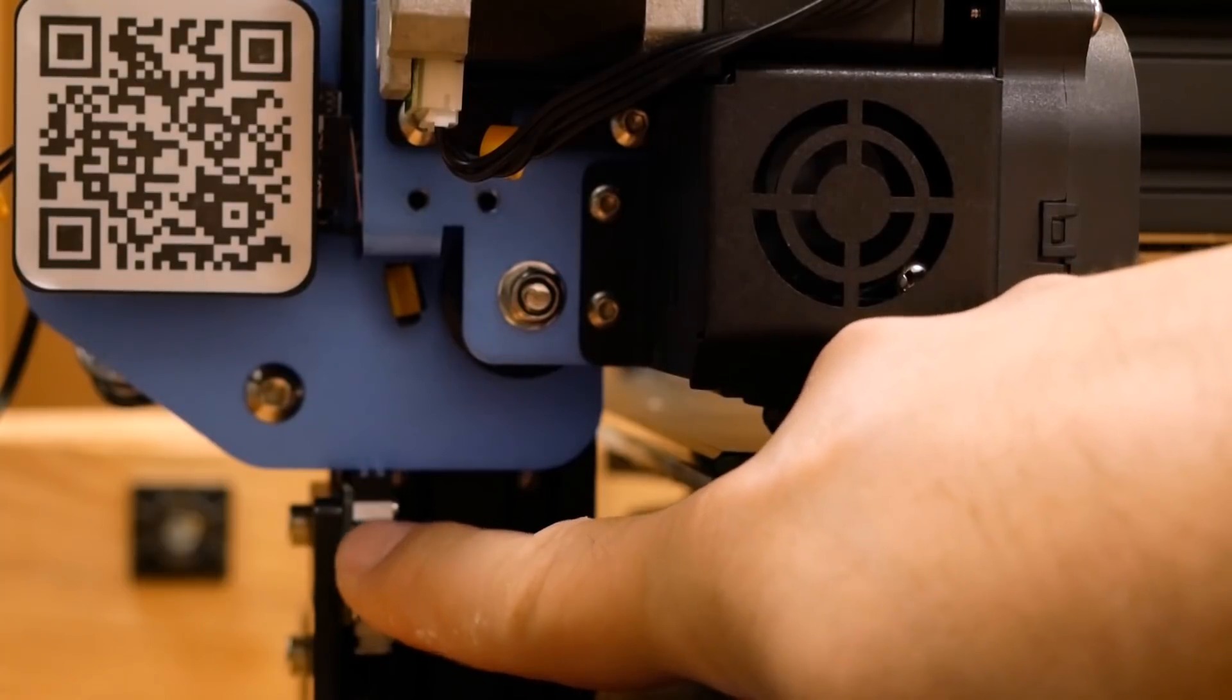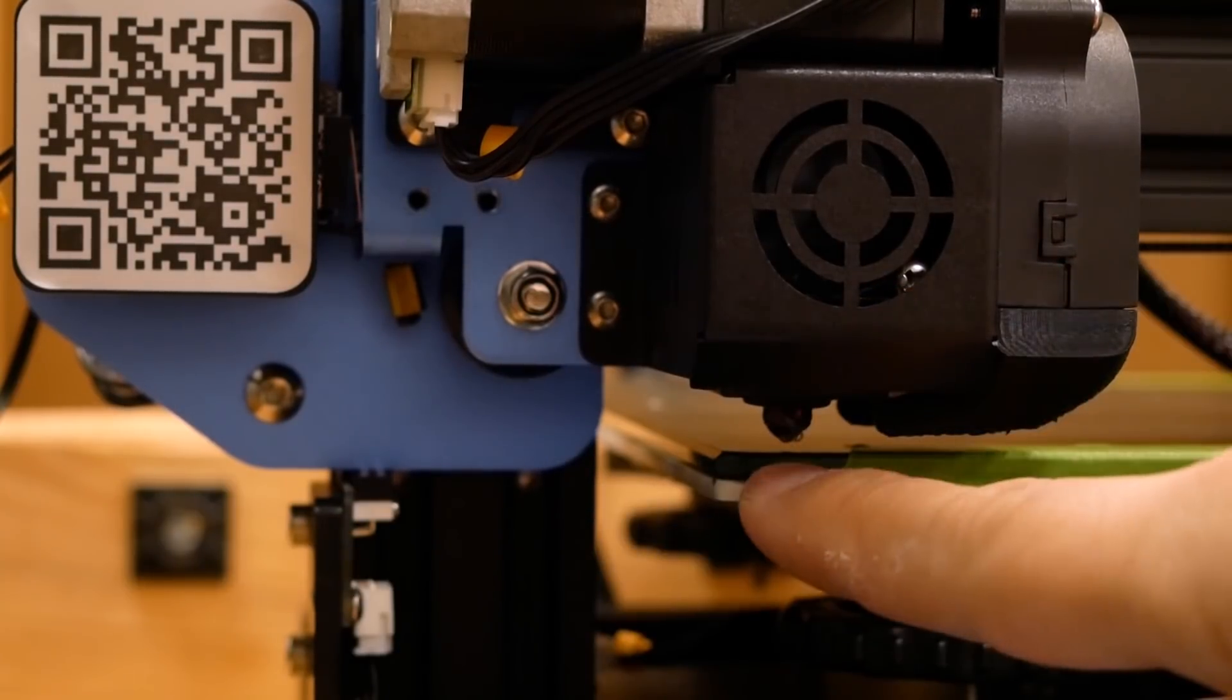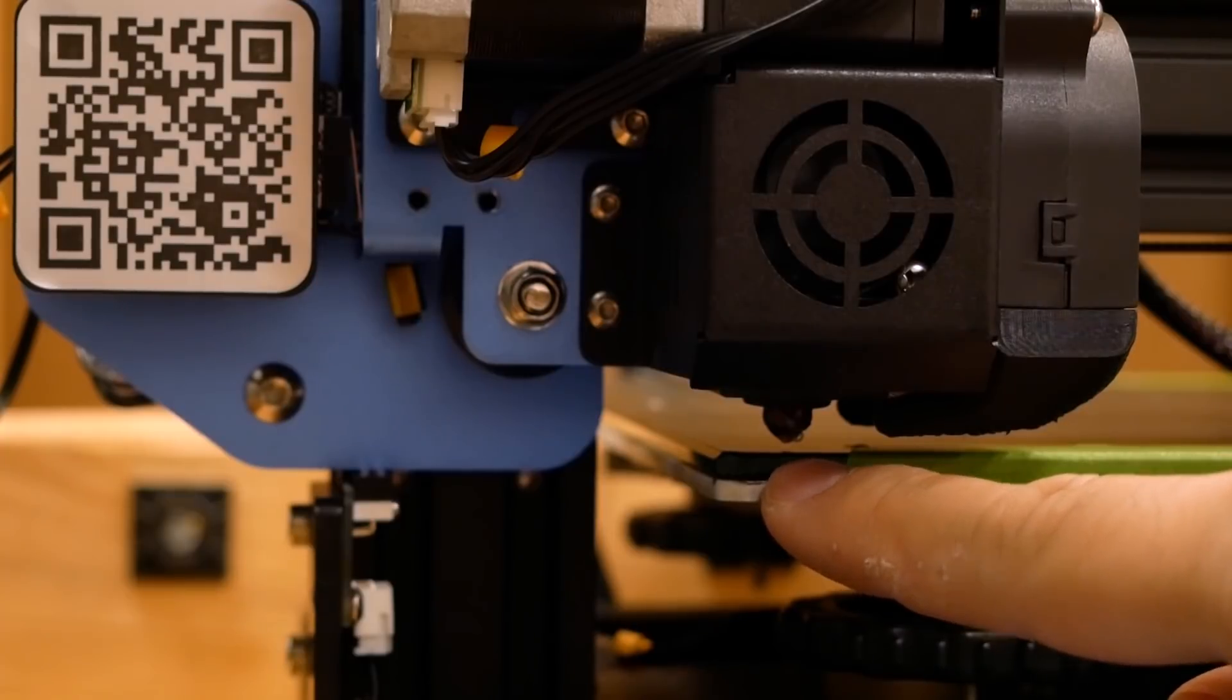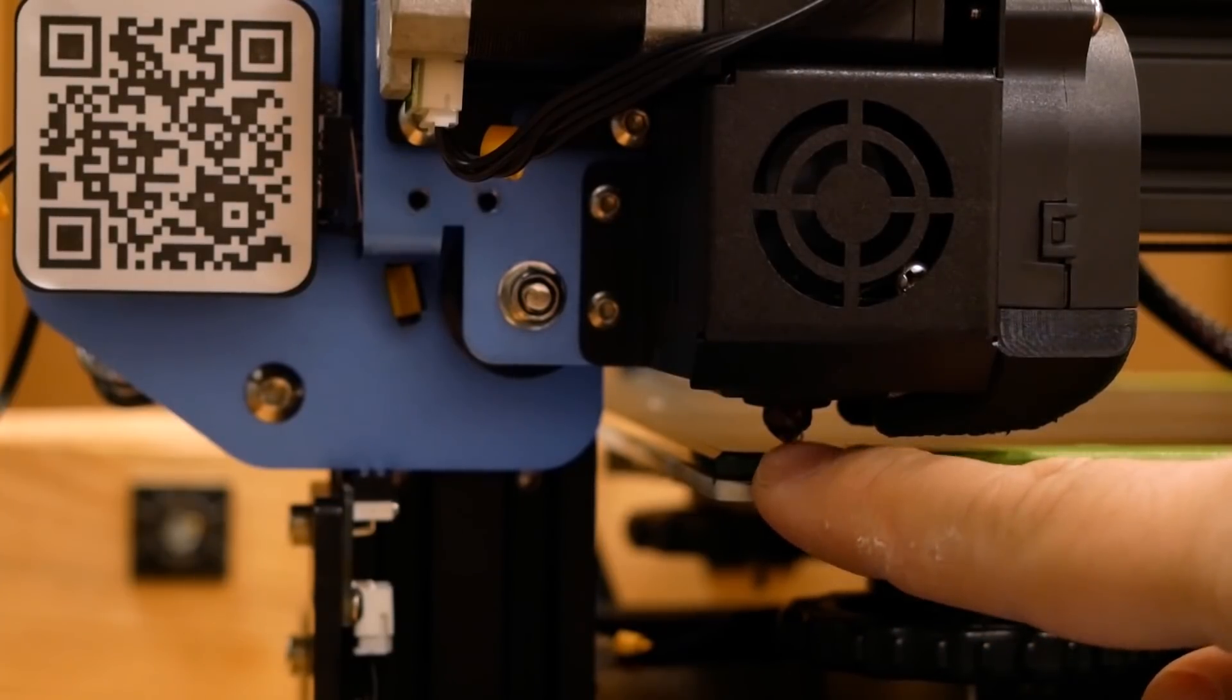Just go slowly and only lower the z-axis limit switch a little bit until you end up in a situation kind of like this where you've got just a couple millimeters of space, as little as possible, between the bed and the nozzle.